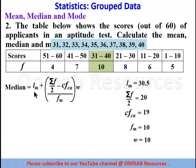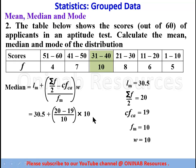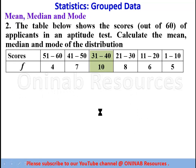Substituting into the median formula: Lm is 30.5, plus (summation of f over 2 is 20, minus cfca which is 19), divided by fm which is 10, multiplied by class width 10. So 20 minus 19 gives 1; 1 over 10 times 10 gives 1. Therefore the median is 30.5 plus 1, which equals 31.5.